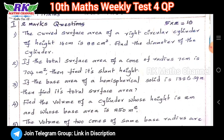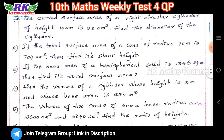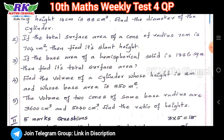The second question is the total surface area of a cone — radius and slant height. The next question is the total surface area of the base of a hemisphere. Then, find the volume of a cylinder given height and base area. Also, the volume of two cones of the same base radius — the volume is equal to the ratio of their heights.